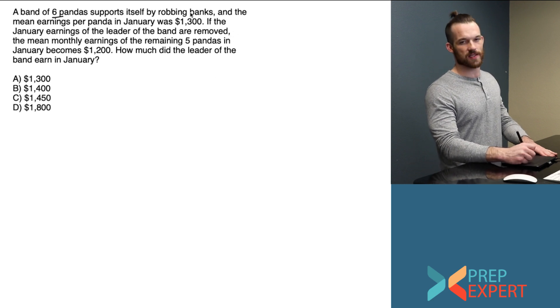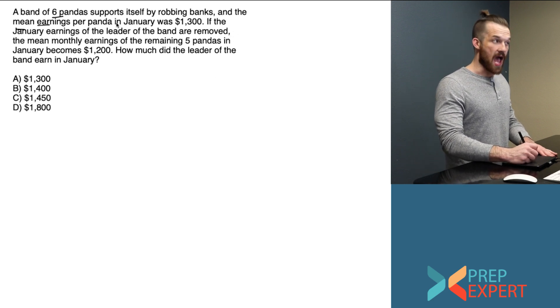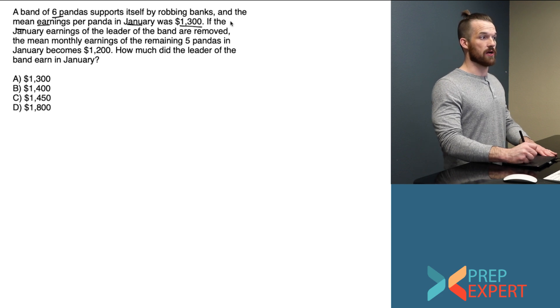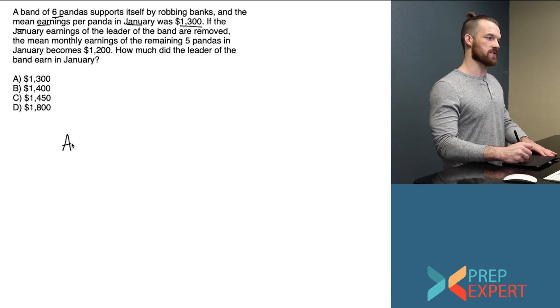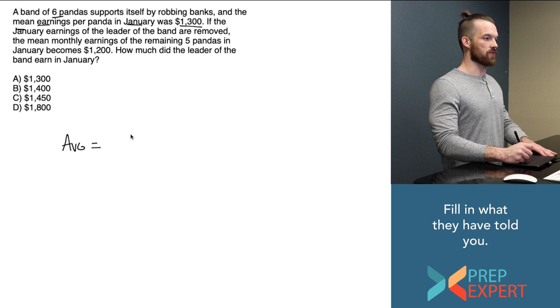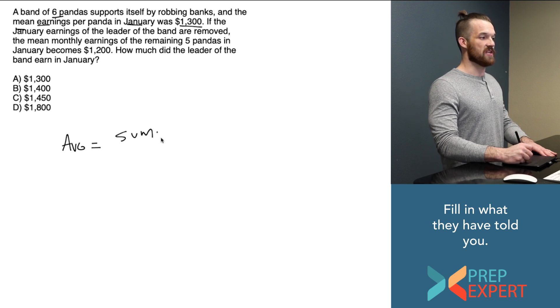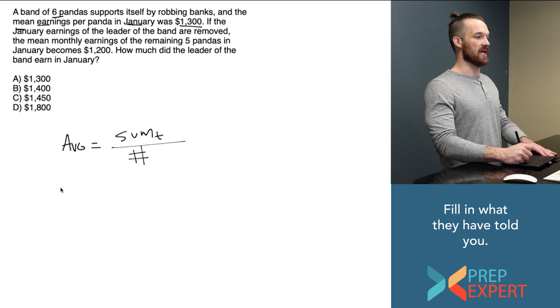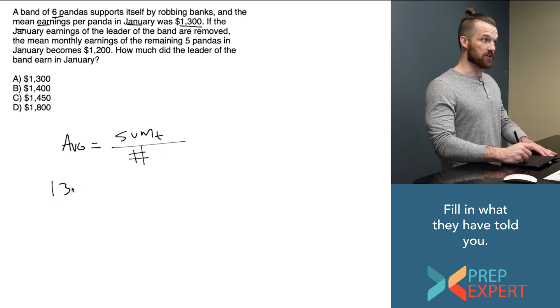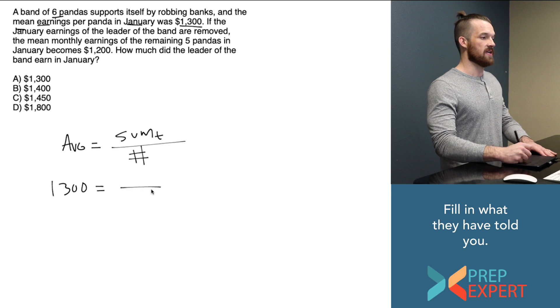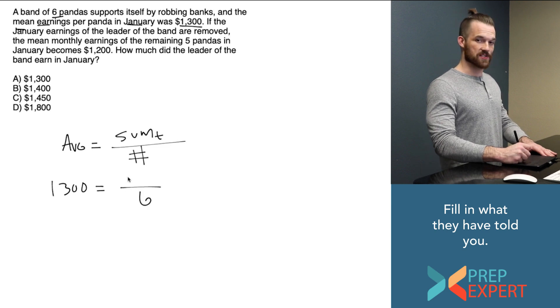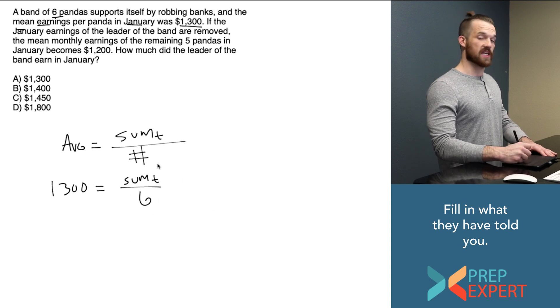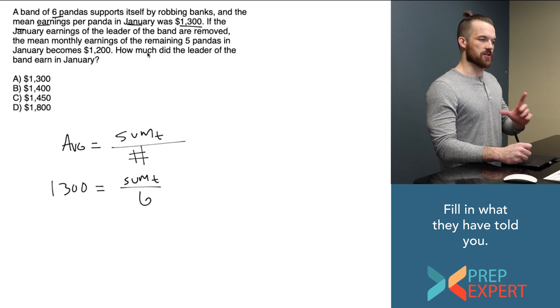We know that there are 6 pandas in the band and that their mean or average earnings in January as a band was $1,300. So I think the average earnings for the whole band in January would be the sum total of the whole band over the number of pandas in the whole band. We know that the average overall was $1,300. We know that there were 6 pandas in the band total. We don't yet know what the sum of all of their earnings was. However, we can calculate that. We'll come back to that in just a moment.